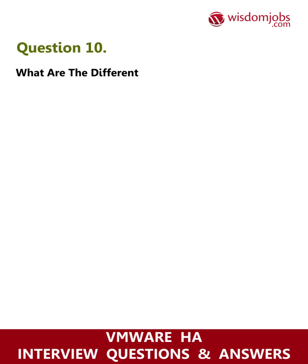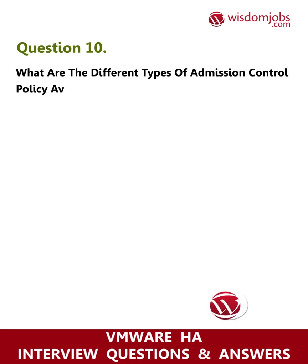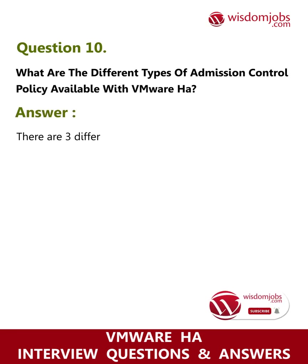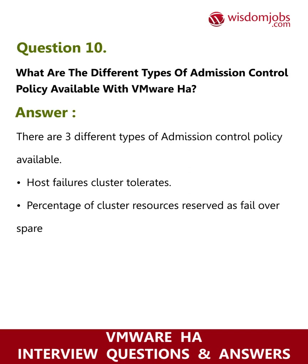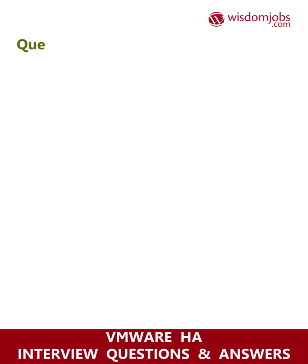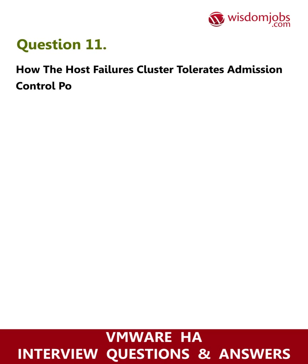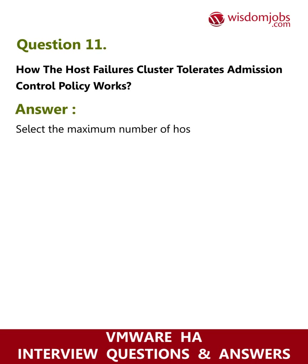Question 10: What are the different types of admission control policy available with VMware HA? Answer: There are three types: 1) Host failures cluster tolerates. 2) Percentage of cluster resources reserved as failover spare capacity. 3) Specify a failover host.